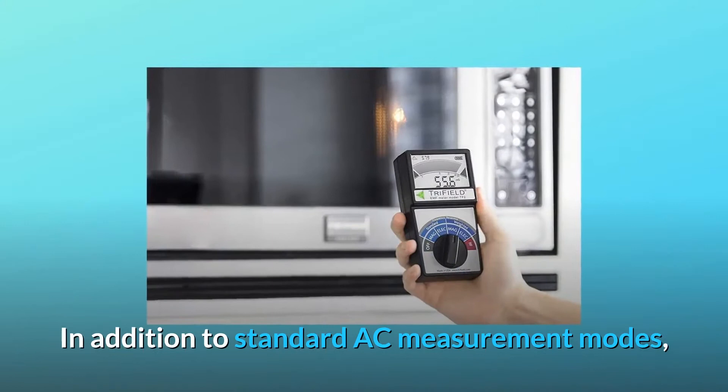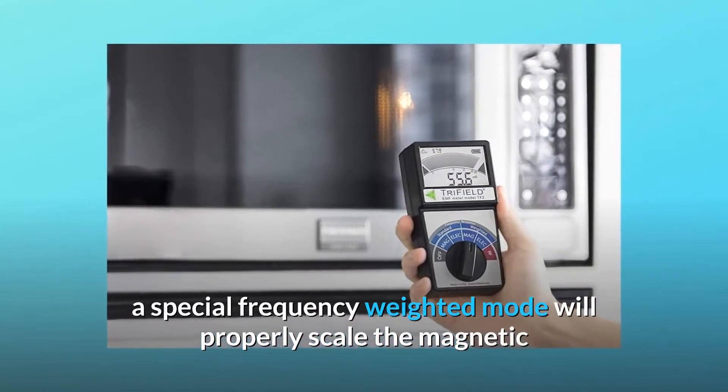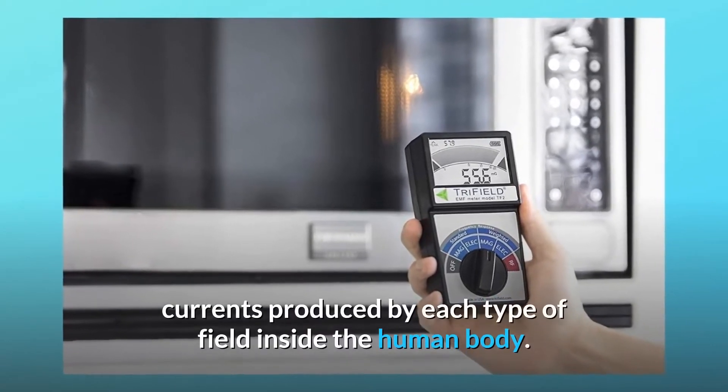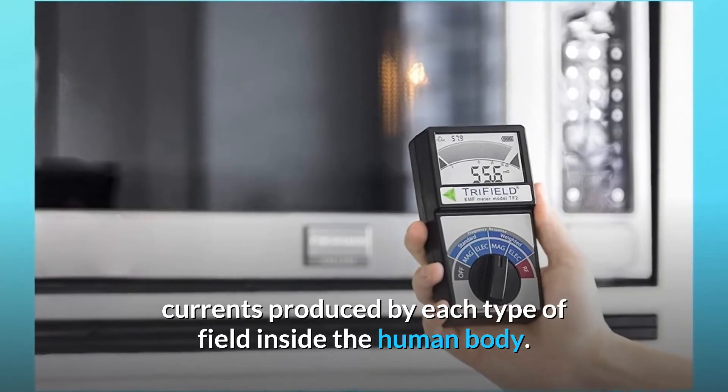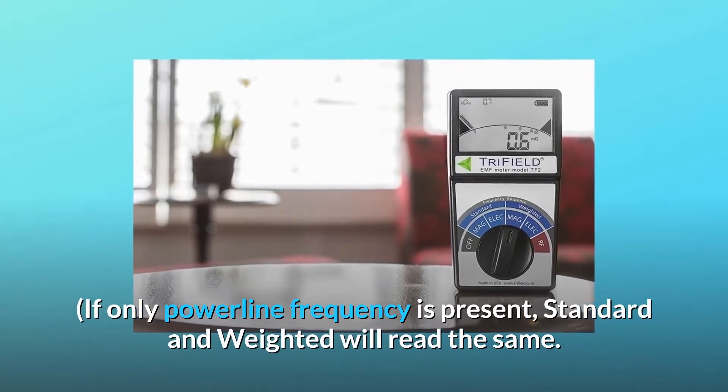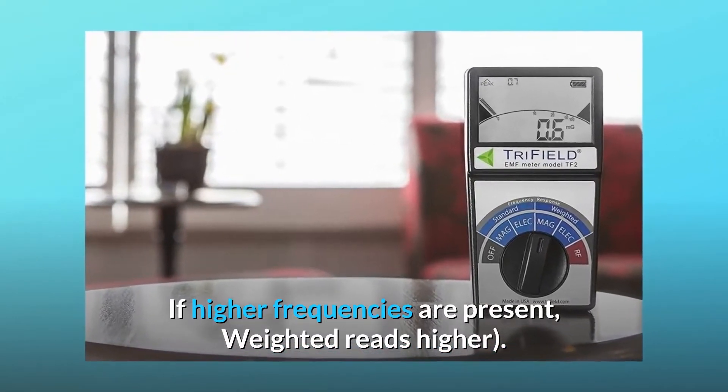In addition to standard AC measurement modes, a special frequency weighted mode will properly scale the magnetic and electric measurements to indicate the full magnitude of currents produced by each type of field inside the human body. If only power line frequency is present, standard and weighted will read the same. If higher frequencies are present, weighted reads higher.